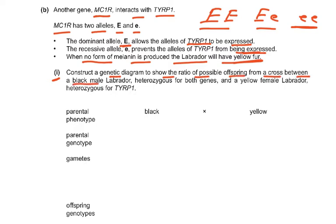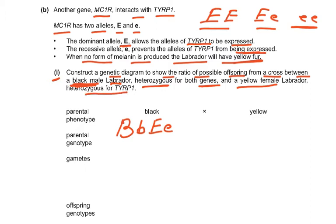The question asks to construct a genetic diagram showing a cross between a black male Labrador, heterozygous for both genes — genotype big B small B, big E small E — and a yellow female Labrador, which is heterozygous for TYRP1. If heterozygous for TYRP1, that means it is big B small B. And it is yellow because the recessive allele prevents TYRP1 from being expressed, so it must be small E small E. This was given in the question — you have to figure this out.